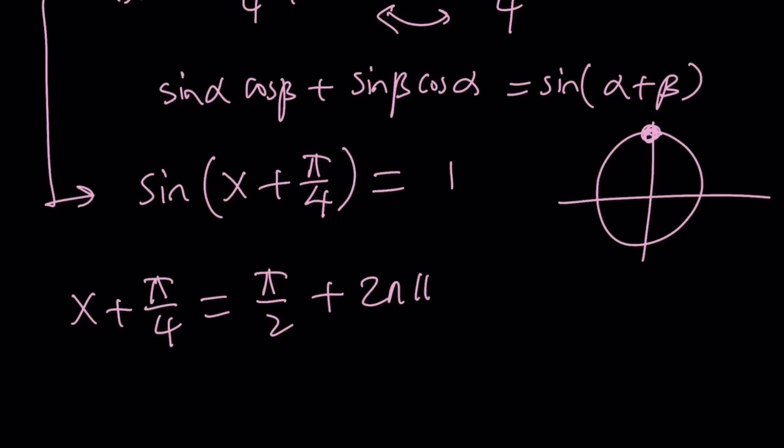Okay, let's go ahead and subtract pi over 4. We're going to get pi over 4 plus 2n pi from here.